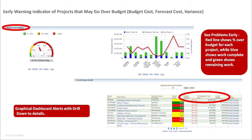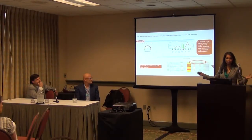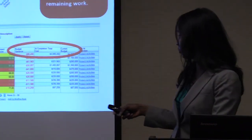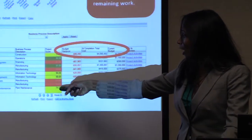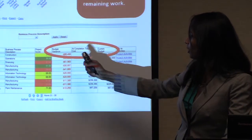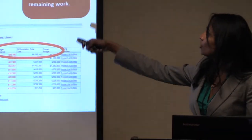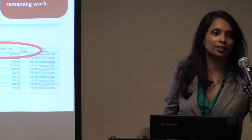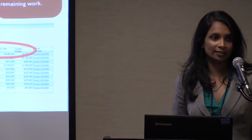Early warning indicators — things like being able to do stoplighting functionality. We're talking about the whole infrastructure behind the scenes that's combining the data, bringing it together, identifying the stoplights, and which ones are the at-risk projects — being able to look at the actual variance in cost in this particular case.